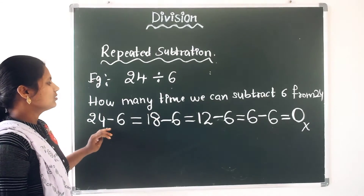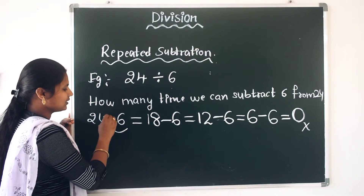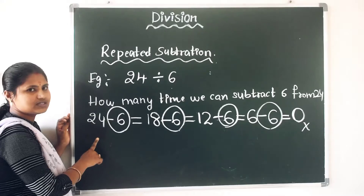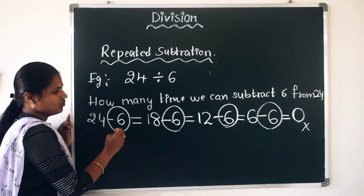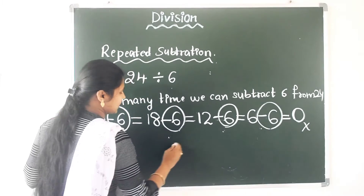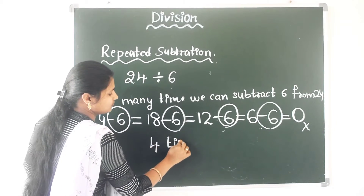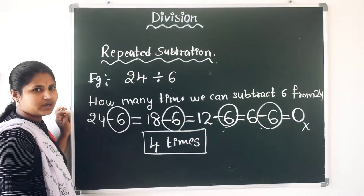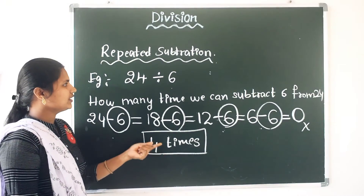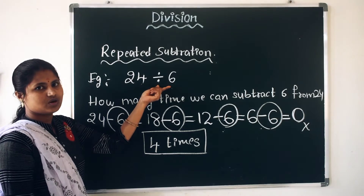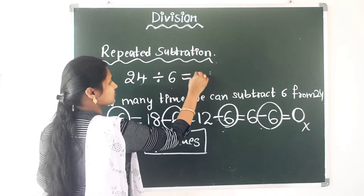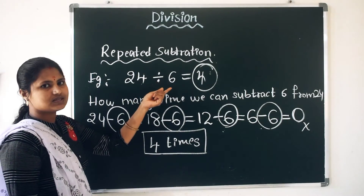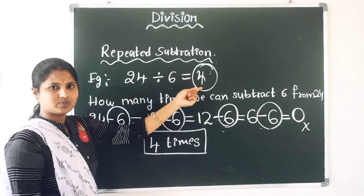See, we have subtracted 6 from 24 — how many times? 1, 2, 3, 4. We have subtracted 6 from 24 four times. So we have divided 24 by 6 — how many times? 4 times.